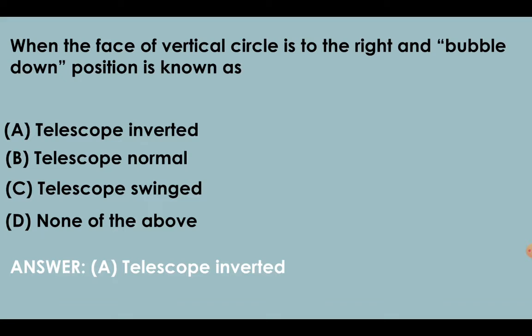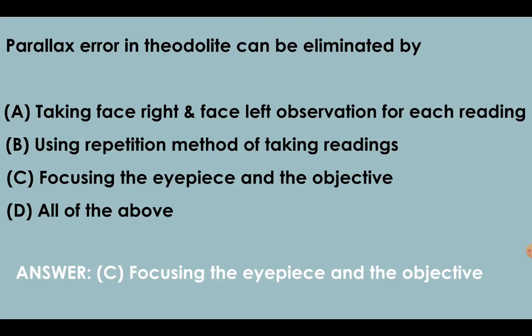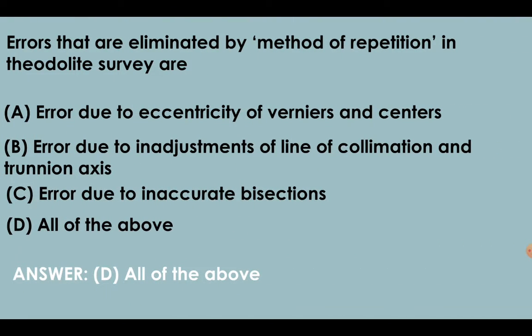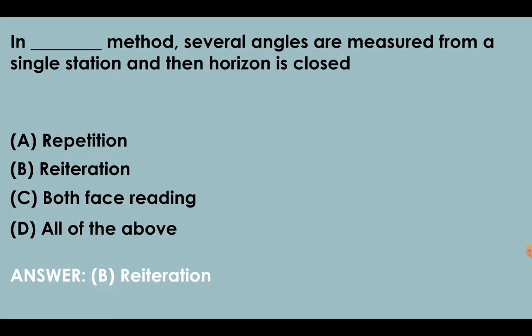When face of vertical circle is to the right and bubble down position, it is known as telescope inverted. Line passing through intersection of horizontal and vertical crosshair, optical center of object glass and its continuation is called line of sight or line of collimation. Parallax error in theodolite can be eliminated by focusing the eyepiece and the objective. Errors that are eliminated by method of repetition in theodolite survey are: error due to eccentricity of vernier and center, error due to maladjustment of line of collimation and trunnion axis, and error due to inaccurate bisection.